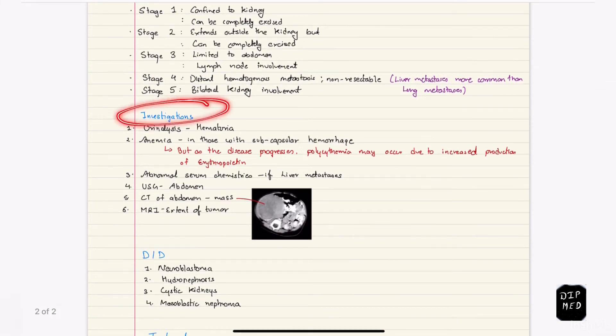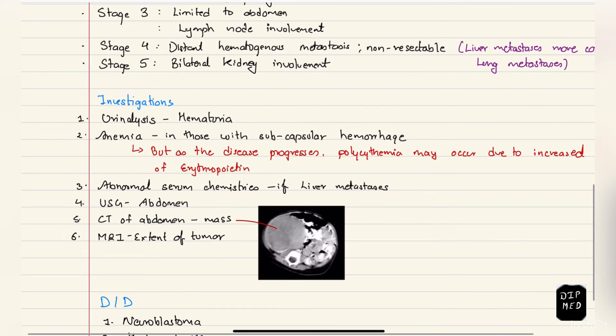Now coming to the investigations. Urine analysis shows hematuria. Anemia is seen in those with subcapsular hemorrhage, but some people who have prolonged gross hematuria can also present with anemia. But later on as the disease progresses, the kidney starts producing so much erythropoietin that the patient will develop polycythemia. So anemia in early stage and polycythemia in the later stage.